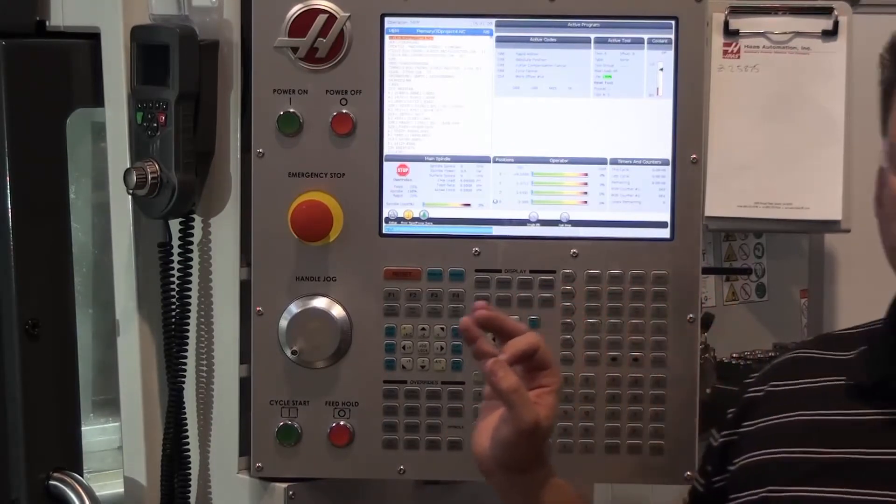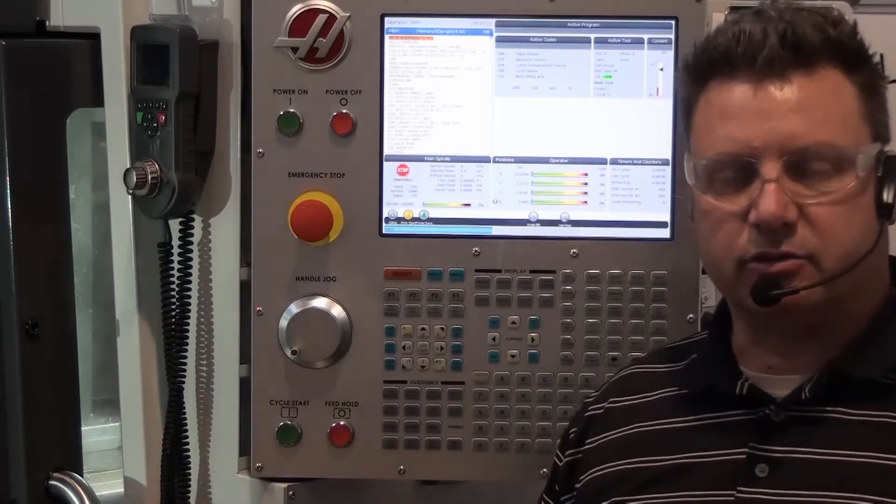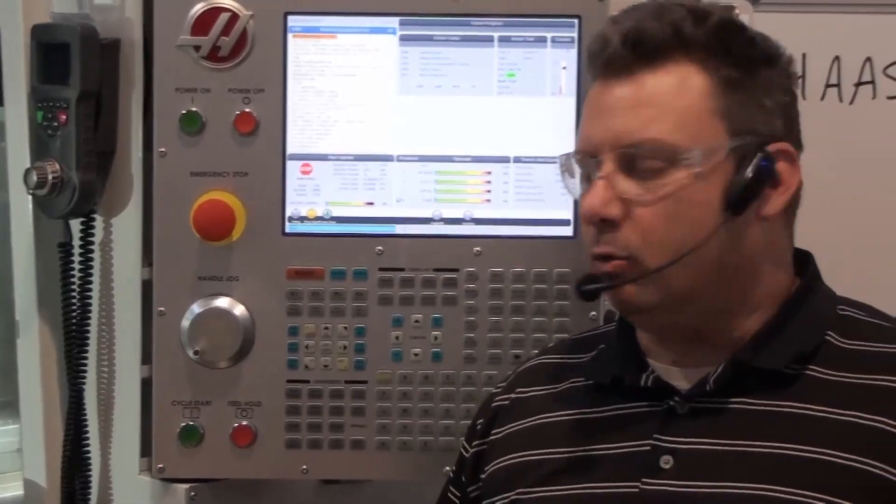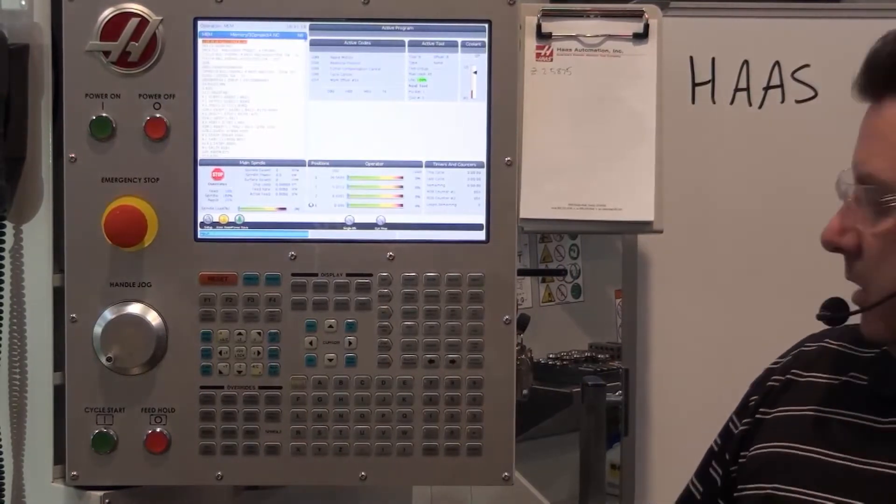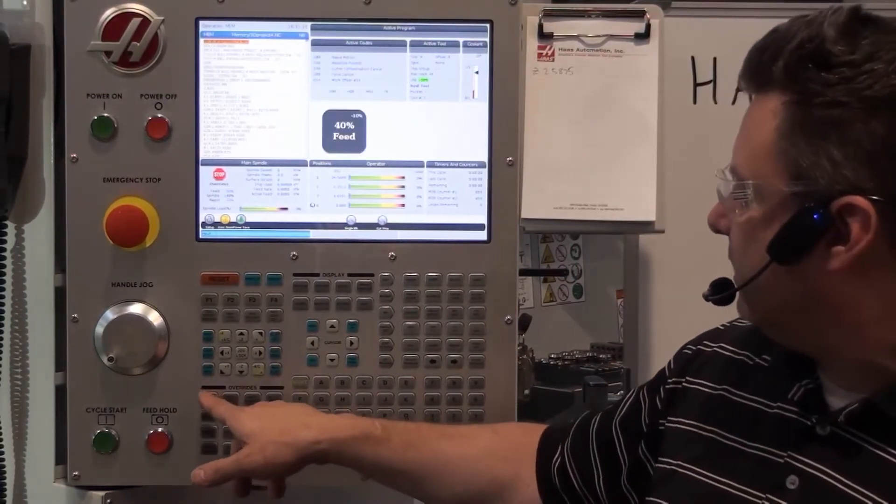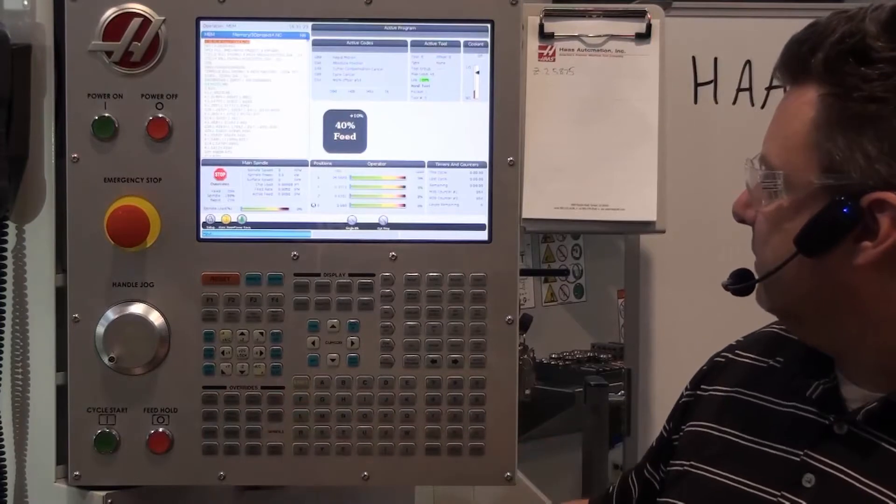There's a couple of things that we want you to do before you just hit cycle start and run your program. One thing is we want you to bring the rapid down to 25%. The other thing that I like to do is I like to bring my feed rate down to 50%.